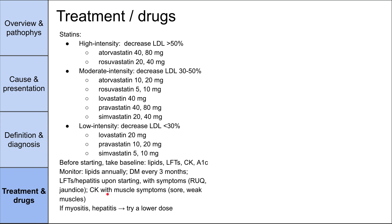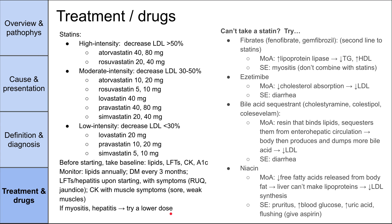If a patient has myositis or hepatitis after starting a statin, you sometimes want to do a washout period and then try them on a lower dose. For example, if you started them on atorvastatin 80mg and they develop myopathy with elevated creatinine kinase, wash out from the statin, wait a few weeks, and then restart them on lovastatin 40mg — a weaker intensity statin. You don't want to give up on statins given how useful they are, even with side effects. Wash it out, give them some time, and start them on a lower-intensity statin. None of the alternatives have as good an effect or mortality reduction for cardiac atherosclerotic heart disease as statins.